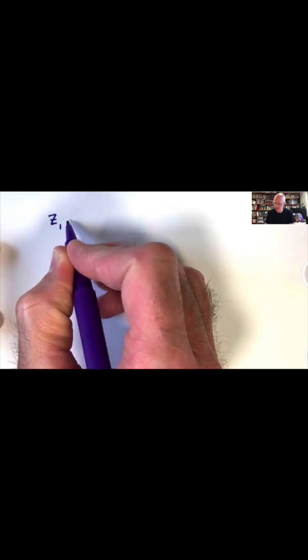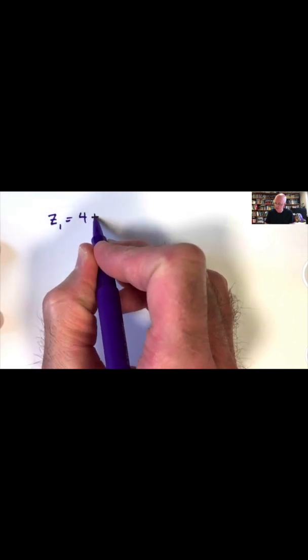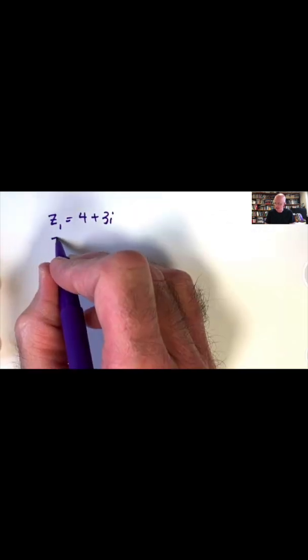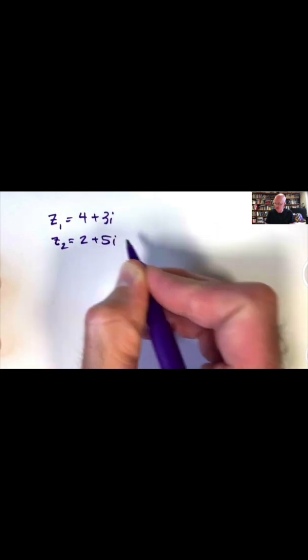In video number 3, we want to talk about complex number addition. Let's let Z1 represent the complex number 4 plus 3i. We're going to let Z2 be the complex number 2 plus 5i.